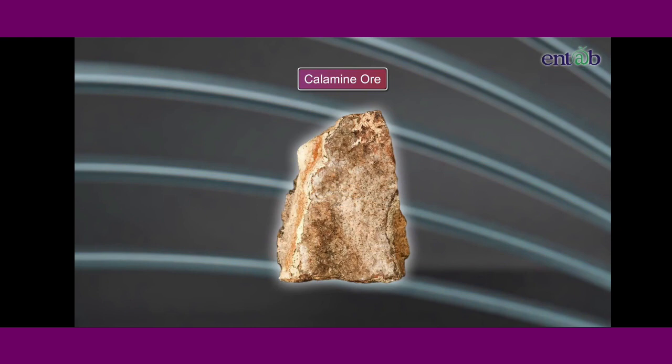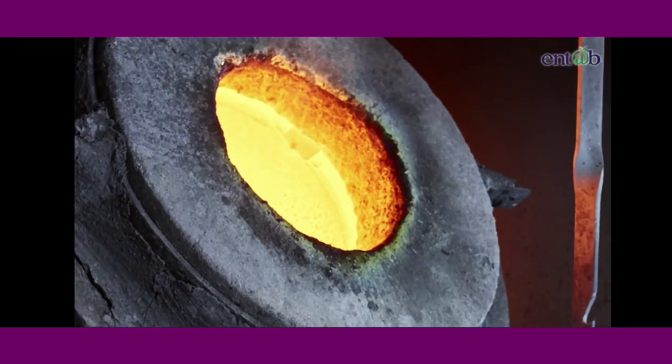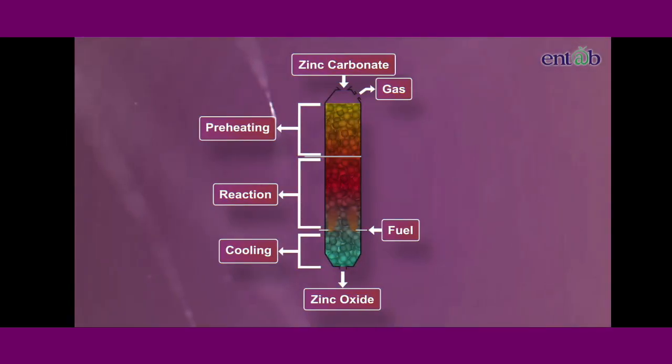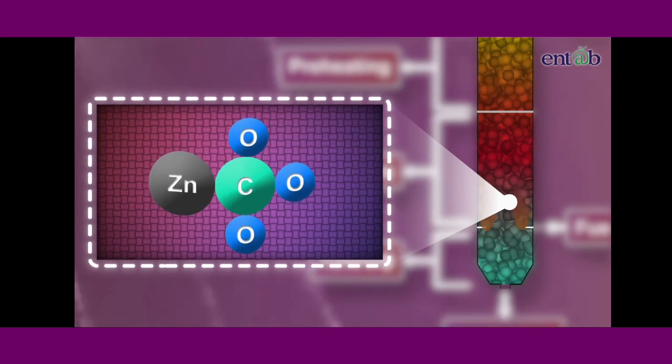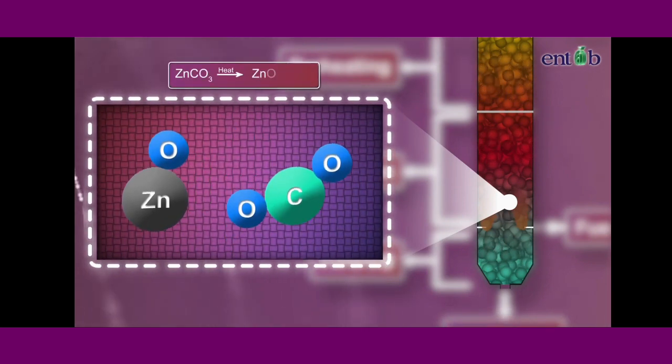For example, calamine ore. Calamine is a carbonate ore of zinc, that is zinc carbonate. Zinc carbonate can be converted to its oxide by heating strongly in the absence of air. So, on heating in the absence of air, it decomposes to form zinc oxide and carbon dioxide.